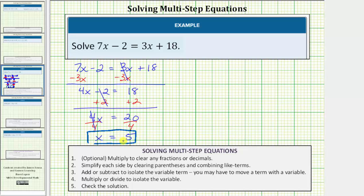Let's verify our solution by making sure that it does satisfy the given equation. So we'll substitute 5 for x in the original equation, which would give us 7 times 5 minus 2 equals 3 times 5 plus 18.